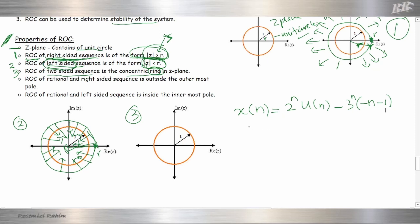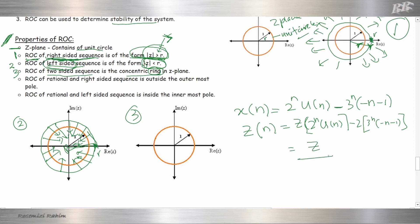We take the Z-transform of X(N) to get: Z-transform of 2^N · U(N) minus Z-transform of 3^N · U(-N-1), which equals Z over Z minus 2 minus Z over Z minus 3.